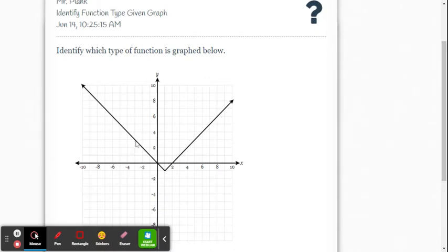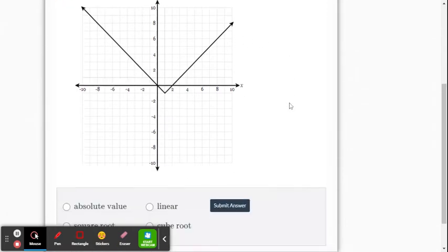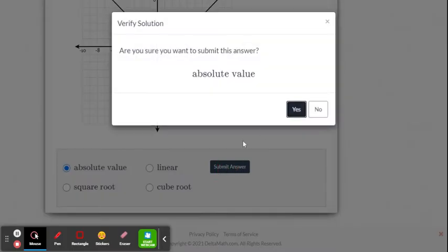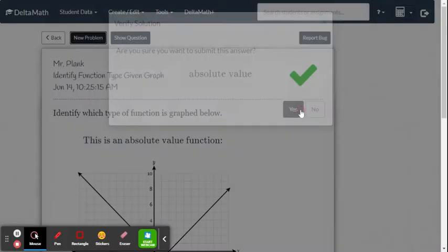We're given the V graph. That is a linear absolute value. So we come down here and it's the absolute value key. Submit our answer. Are we sure? Yes.